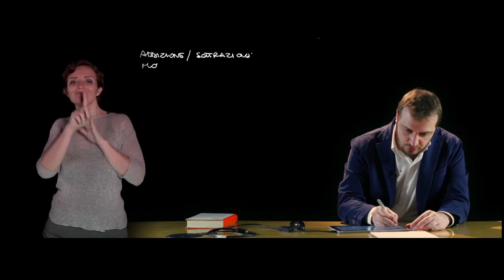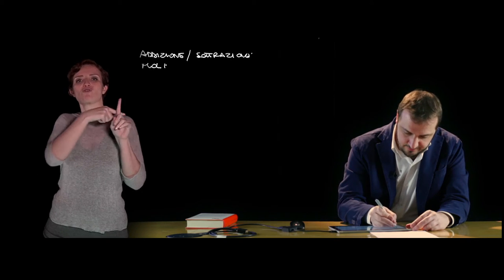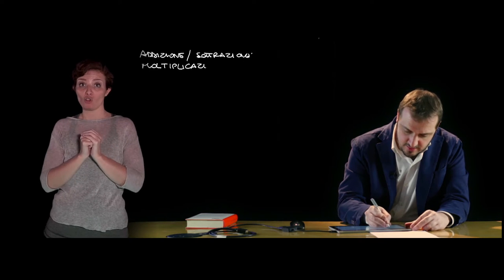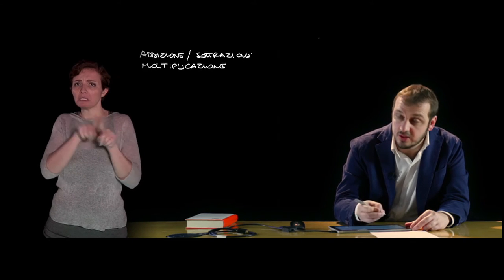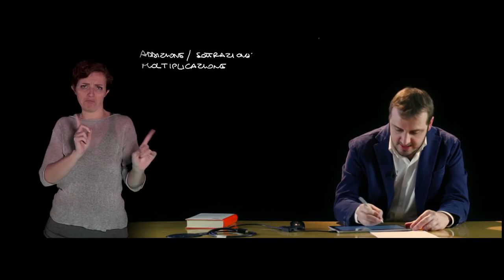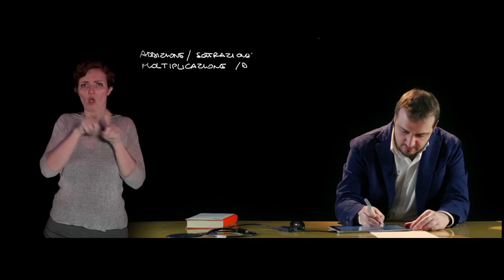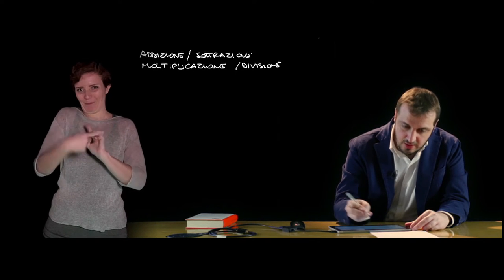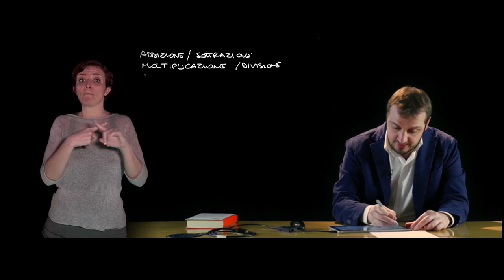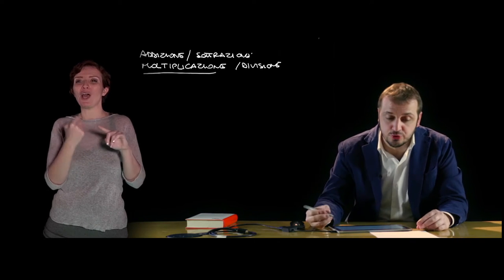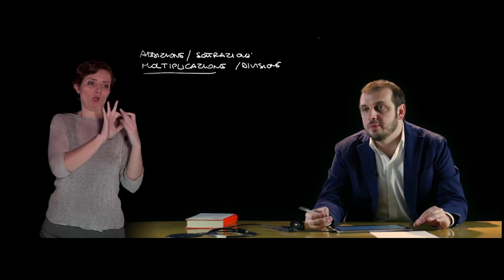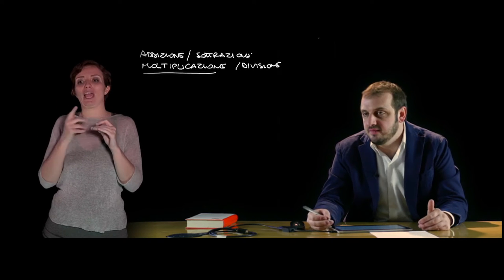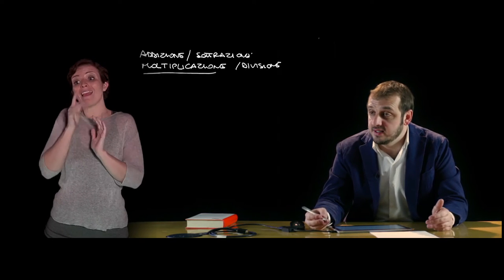Per quanto riguarda la moltiplicazione, i monomi non devono necessariamente essere simili per poter sviluppare le operazioni di moltiplicazione oppure divisione. Il prodotto tra due monomi è un monomio che ha come coefficiente il prodotto dei coefficienti e come parte letterale il prodotto della parte letterale.